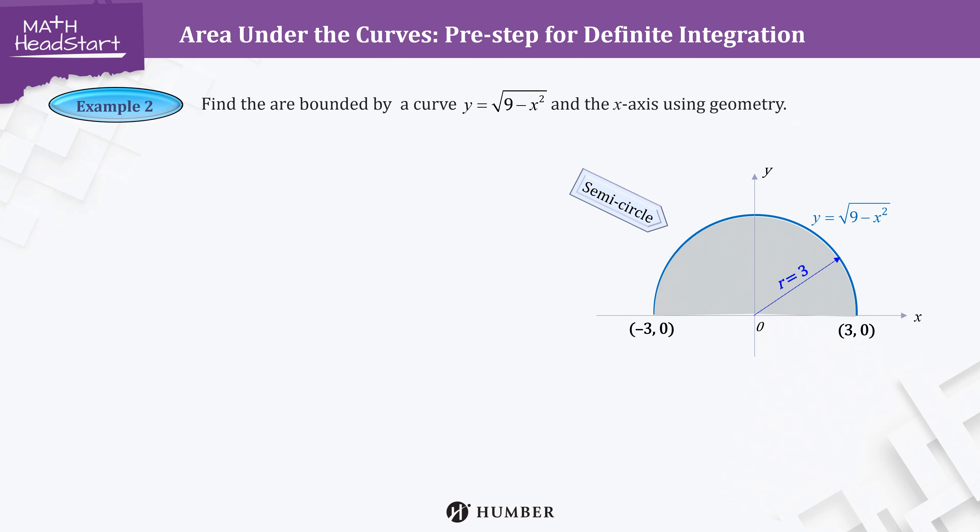Let's find the area of the shaded region then. Since this is a semicircle, we use the formula for a half circle. Substitute the radius 3 into it to get 9/2 π square units, which is our area that is bounded by the curve.